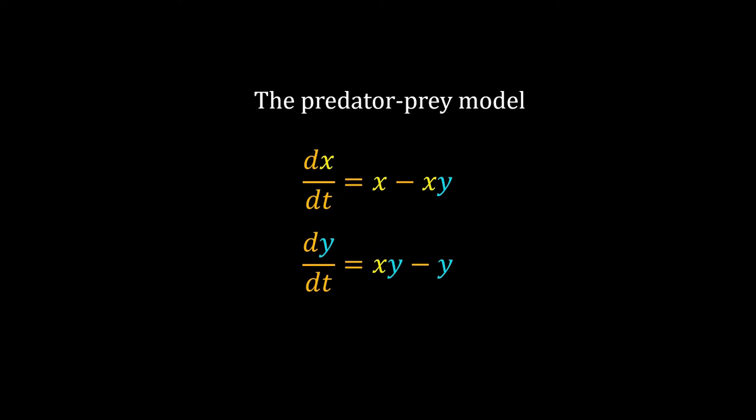This is a predator-prey model with two ODEs. We have two dependent variables, X and Y. X represents the number of prey in a forest and Y represents the number of predators. The predators eat the prey and their proliferation depends upon how much they eat.